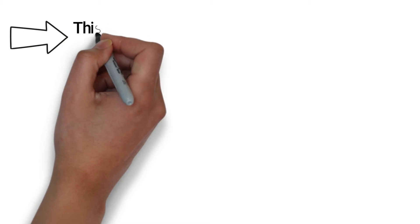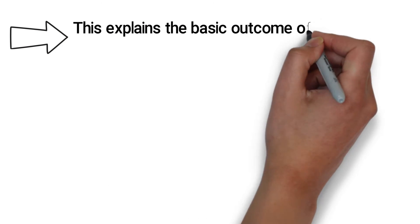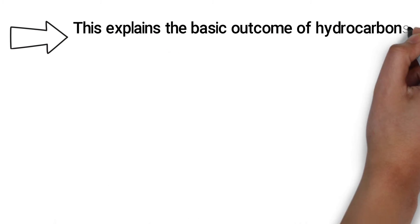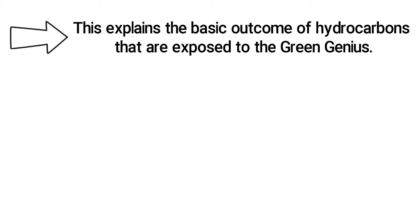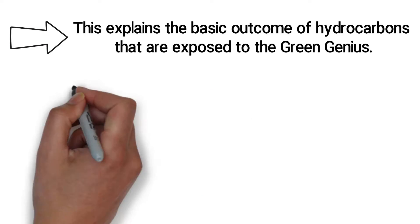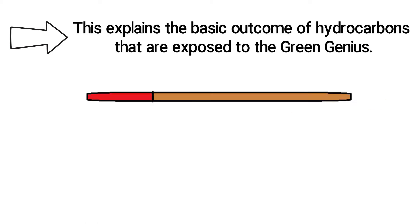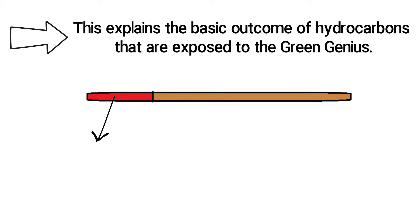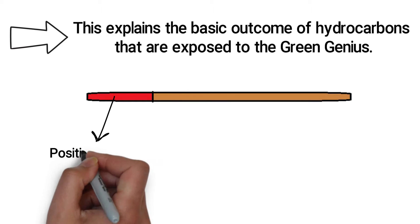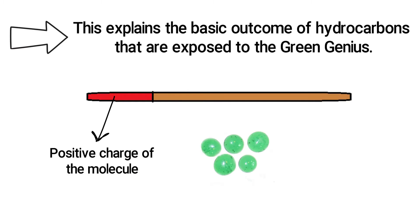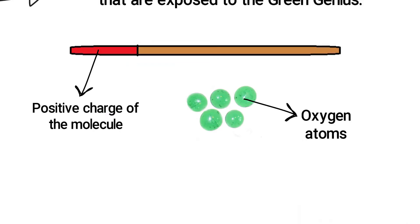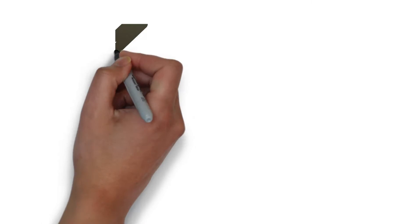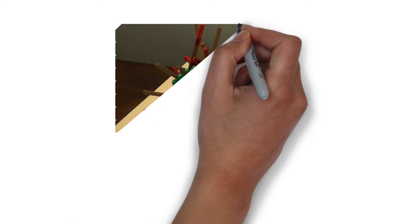This visual is a very elementary example of the science but thoroughly explains a basic outcome of hydrocarbons that are exposed to the Green Genius. The brown and red sticks represent hydrocarbons, with the red tips representing the positive charge of the molecule. The green beads represent oxygen atoms.